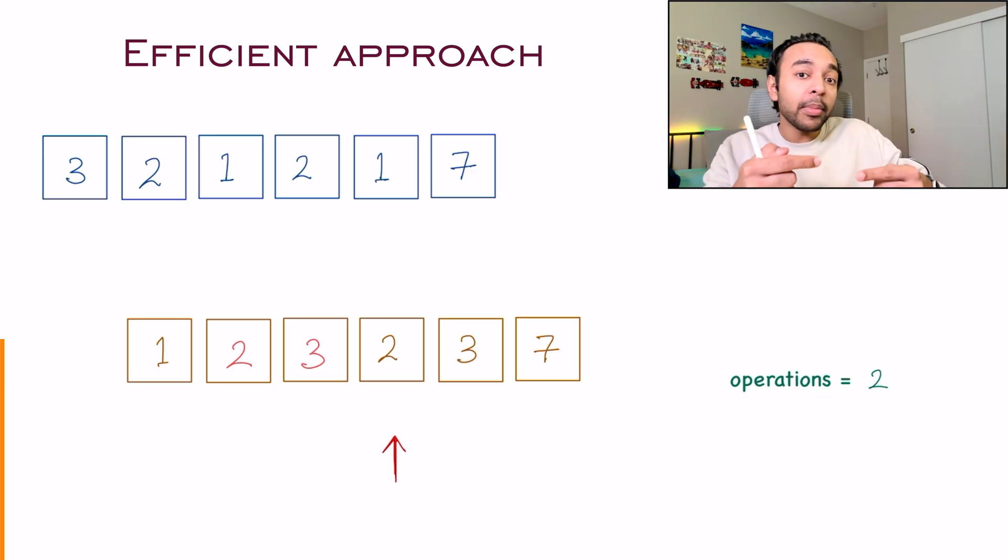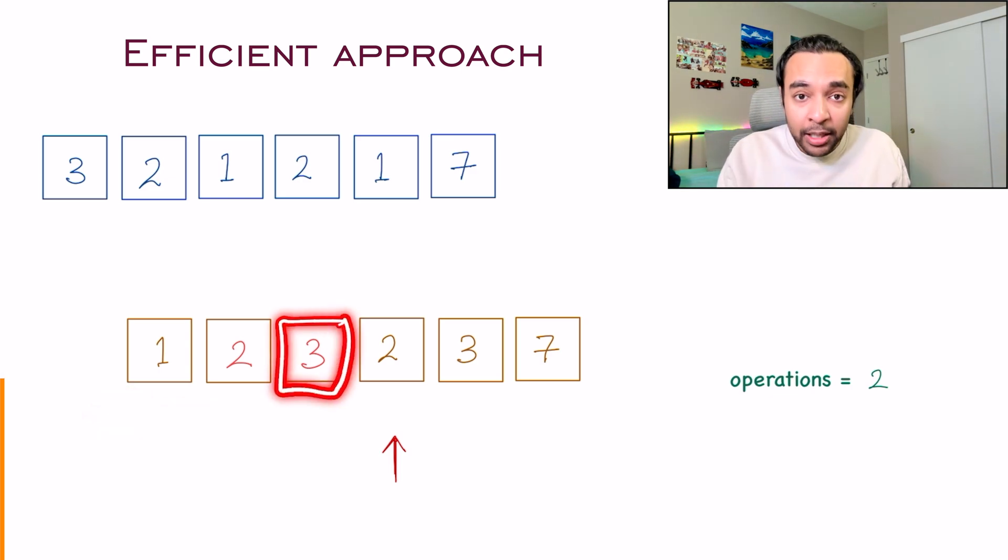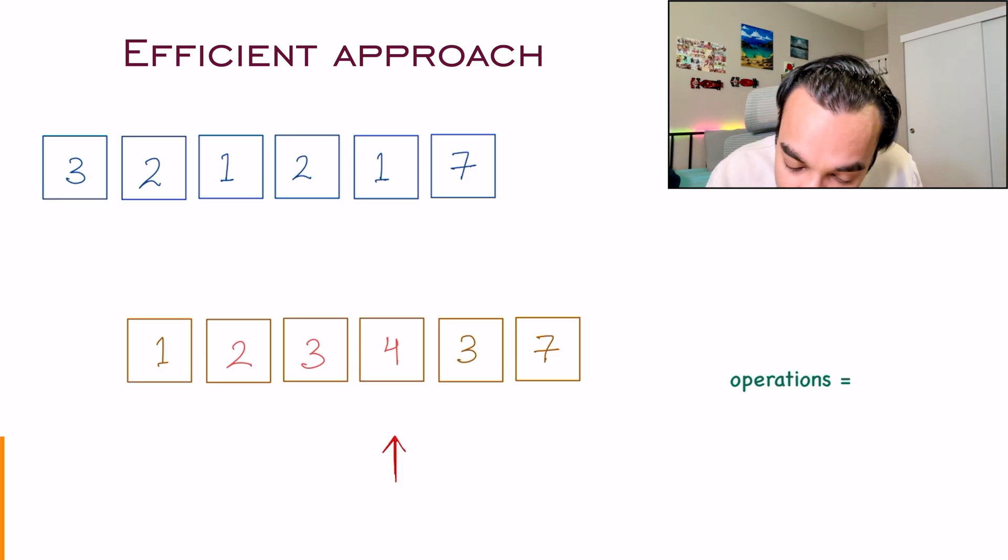So will you increment it 1 by 1? No. That's where the sorted array helps you. Now you know that the elements to the left are all smaller. So you need to look at only this particular element and increment it by 1. Once you increment, this will become a 4. So how many increments do you need? You need 2 increments. So basically, this element will now become a 4, and I did 2 operations for this. I think you get the idea now.